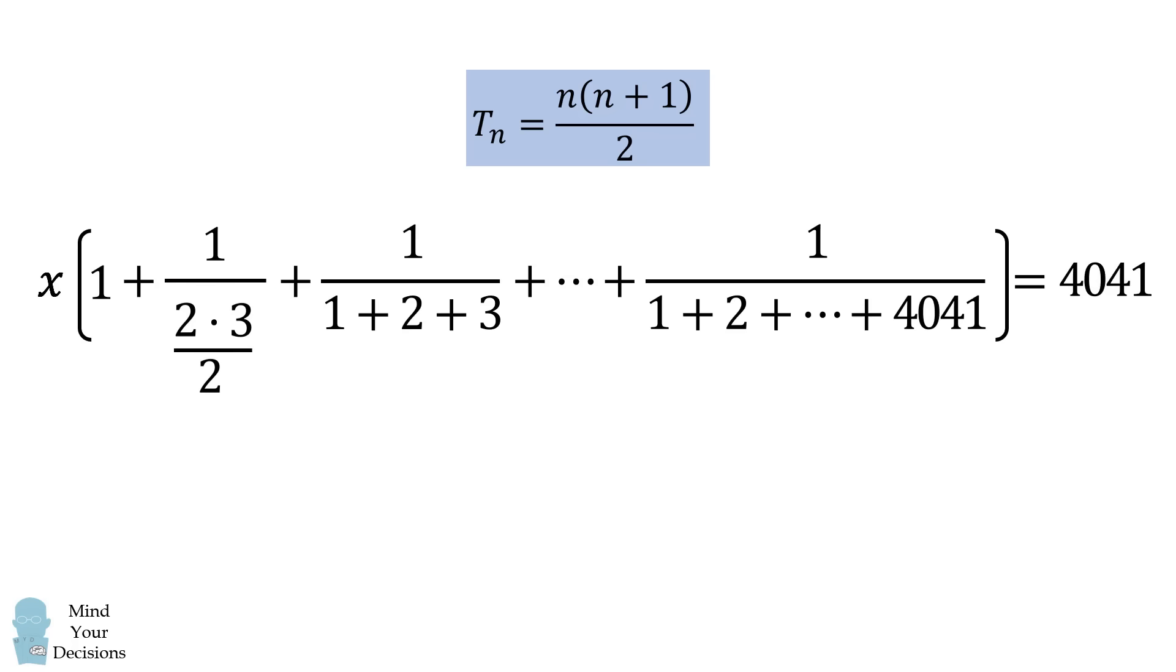We'll substitute that into the denominator. The third term will be t3, which is equal to 3 times 4 over 2. We substitute that in. The final term will be equal to t of 4041, and we'll substitute that in.